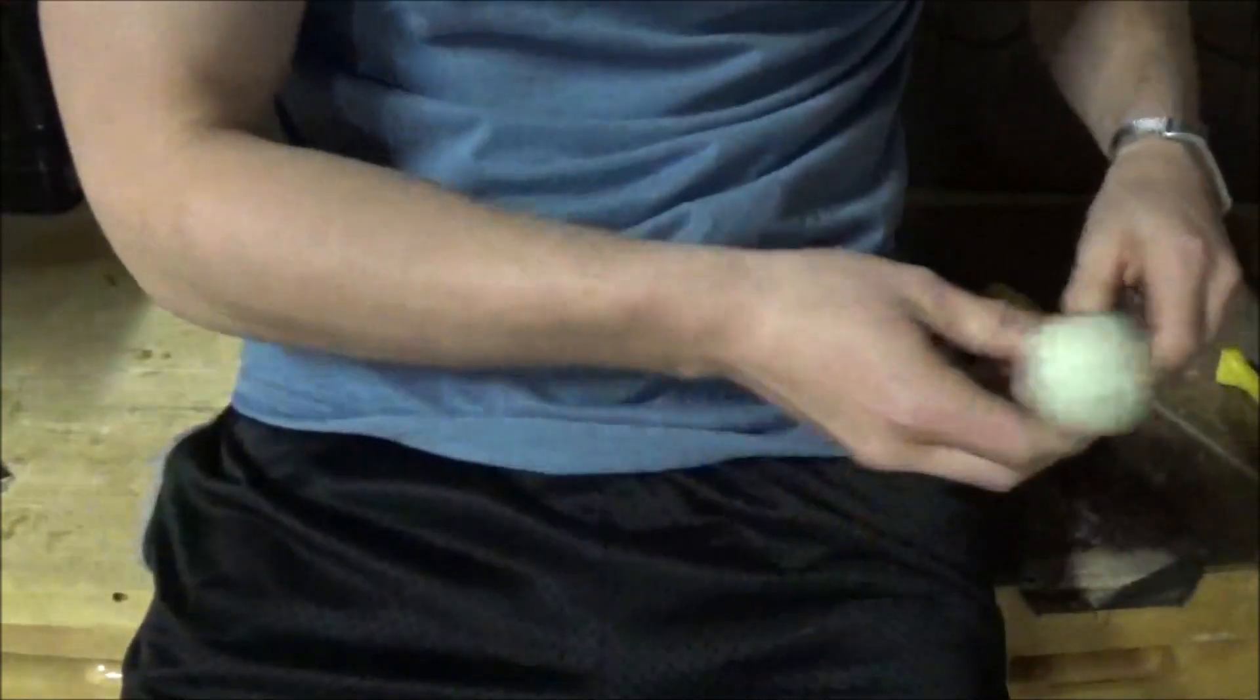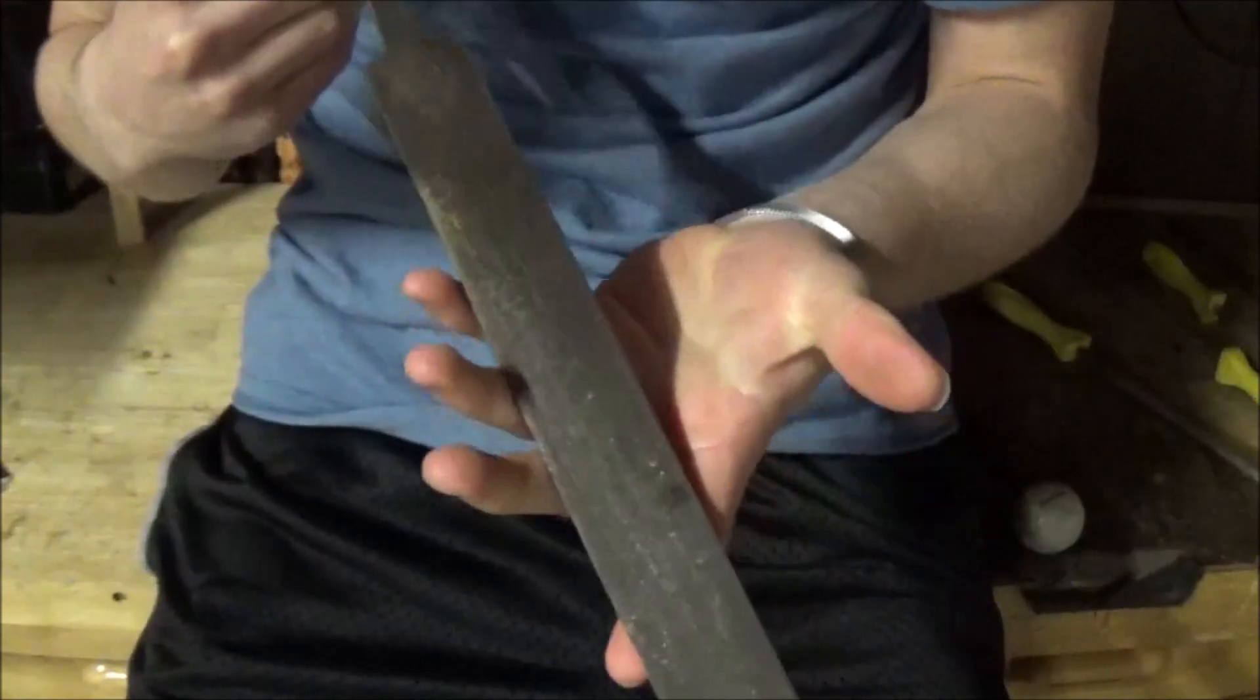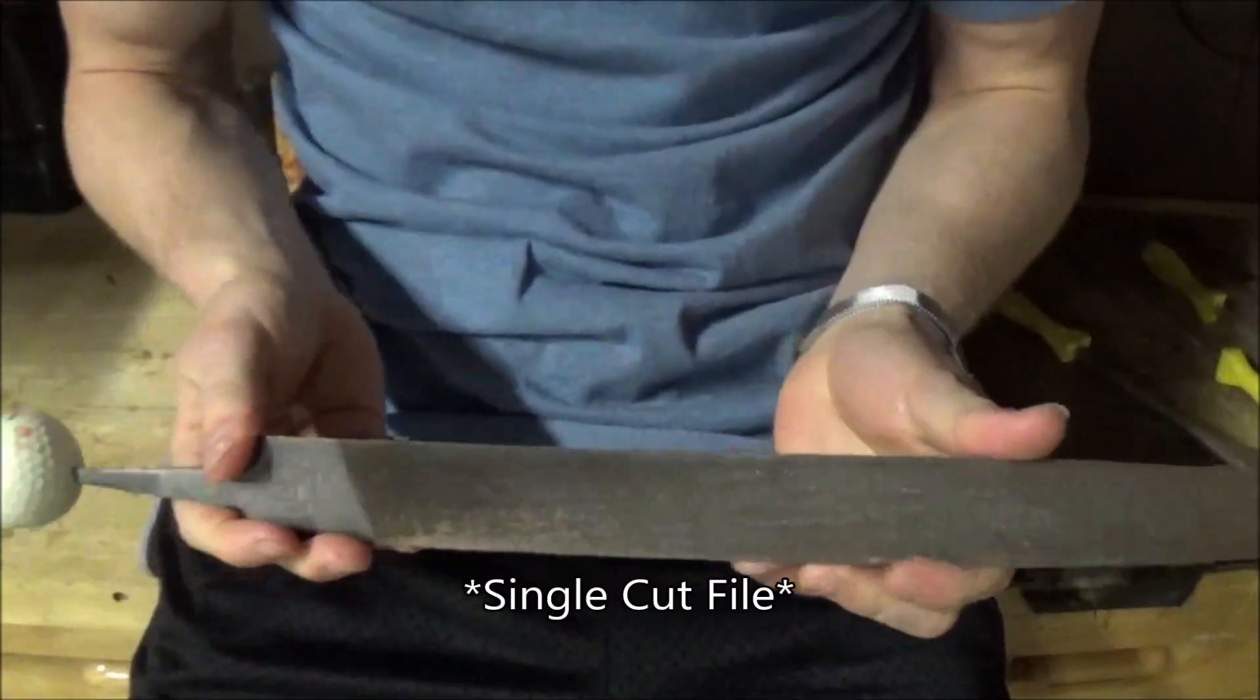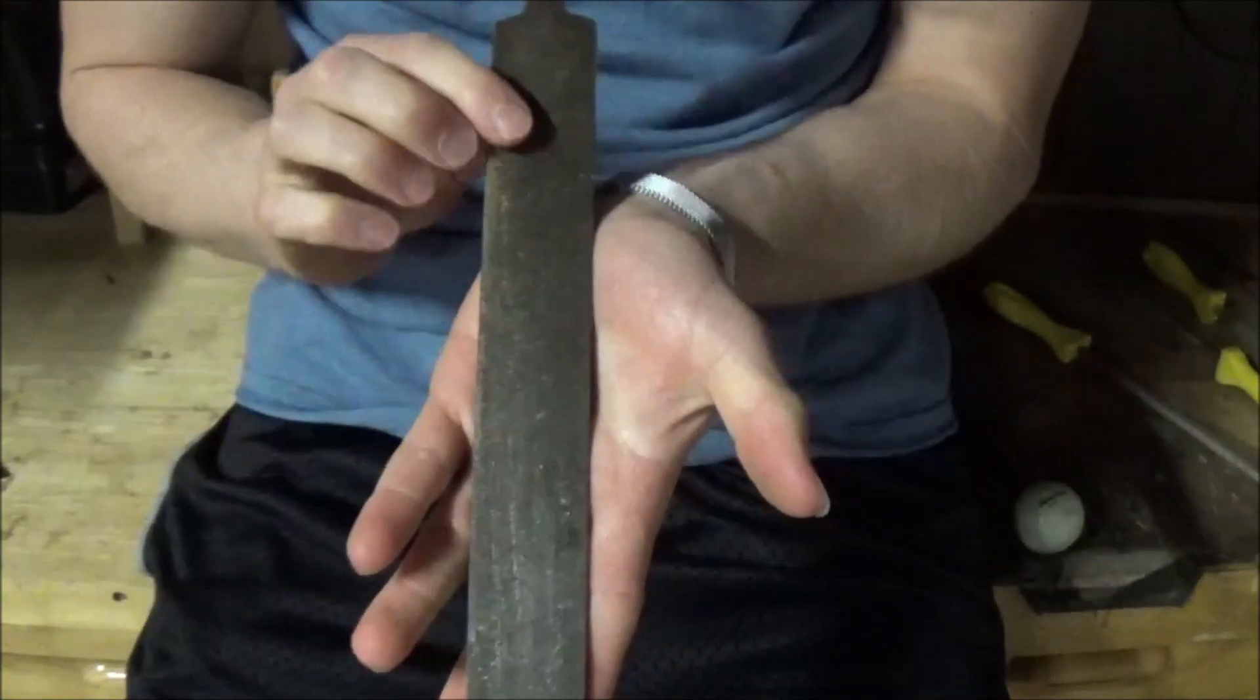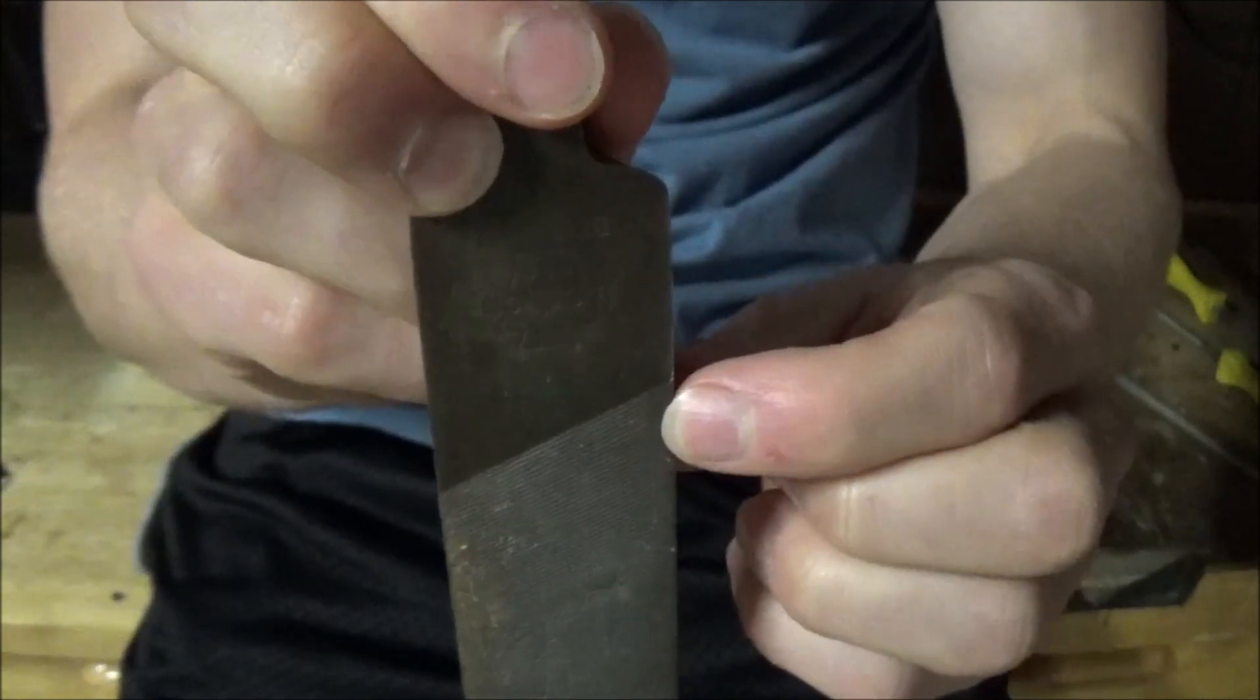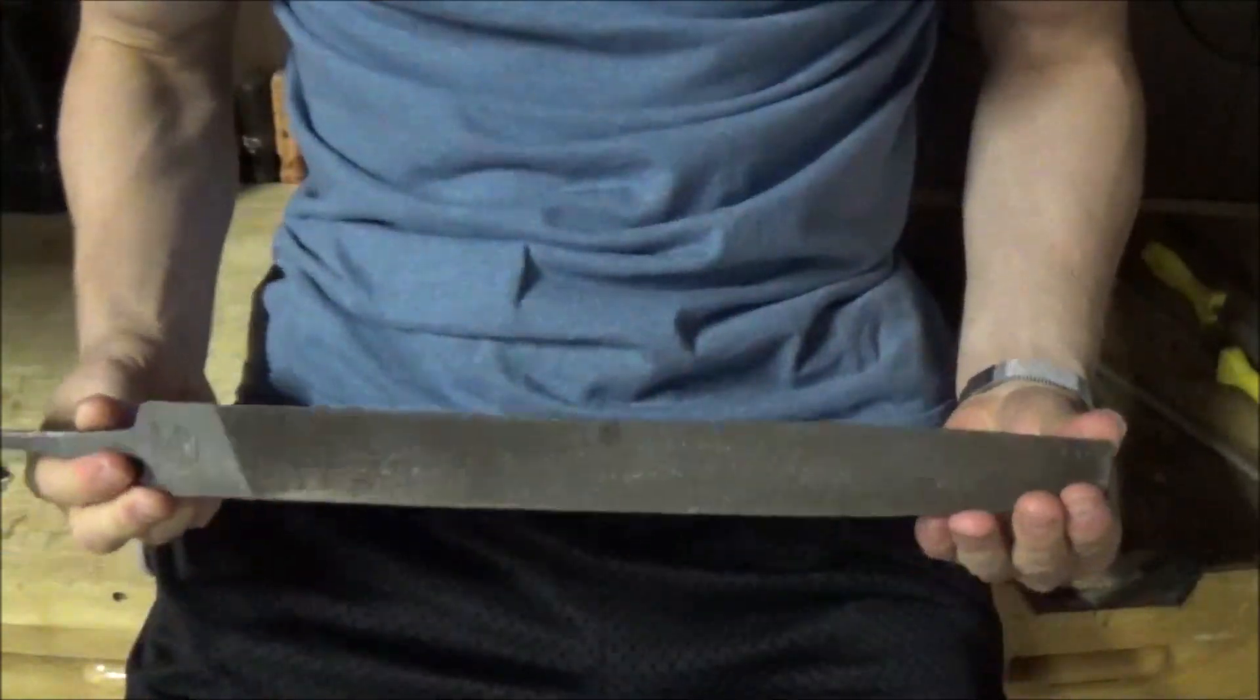The other type of tooth cut, if you want to call it that, is a mill cut, where instead of having two sets of teeth you just have one set. Basically if the entire file were to just look like this right here before we get into the crosshatch, that would be a mill cut, and you'd use a mill cut file to get a smoother surface on your work piece.